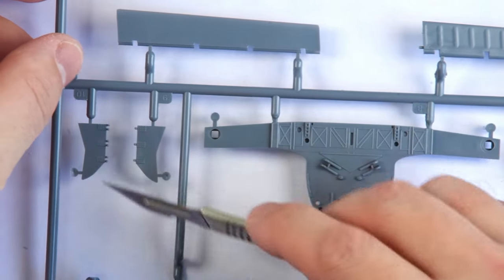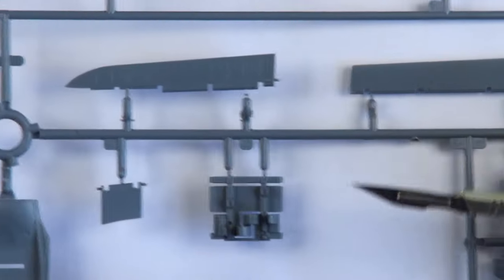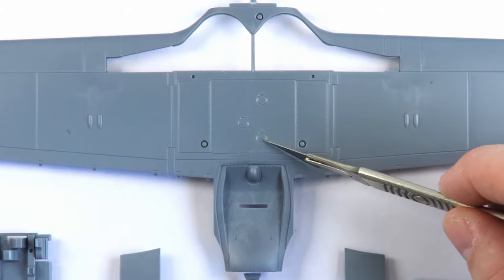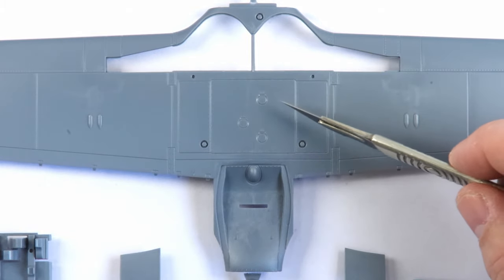Here we can see some excellent raised rivet detail on those undercarriage door hinges. The undersurface of the wing, showing the radiator recess and the engraved detail here.